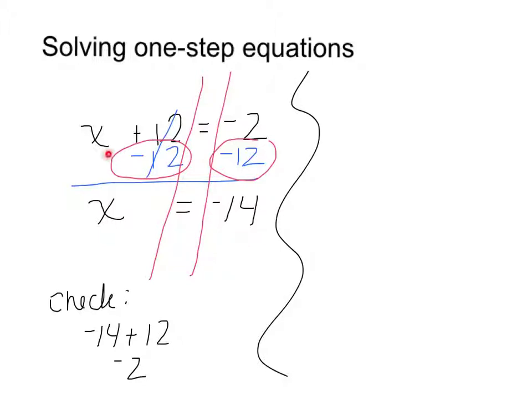So this was an example if I had something being added to the variable. Let's take an example where I have something being subtracted from the variable. Once again, I think about having the divide around the equal sign, and I notice that from the x, I'm subtracting 4.